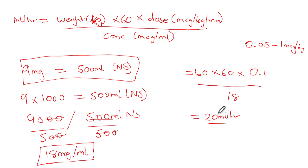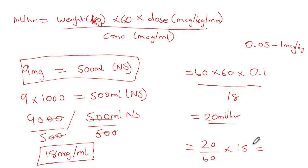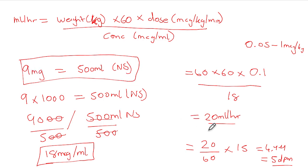If you don't have an infusion pump and only have a giving set, convert to drops per minute: 20 mils over one hour means 20 ÷ 60 = 0.333, multiplied by the drop factor of 15 = approximately 5 drops per minute. So the order you leave is: 9 mg of adrenaline in 500 mils of saline, to run at 5 drops per minute — and titrate accordingly.